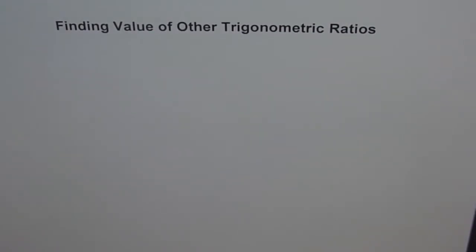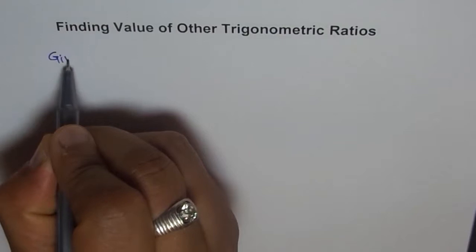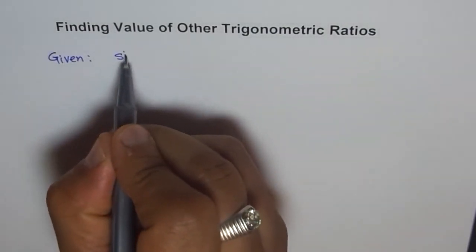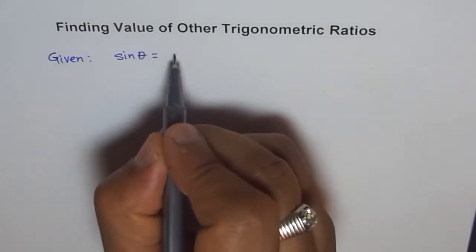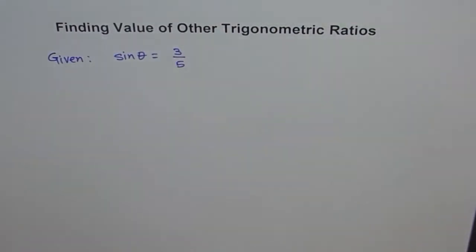Hello, let's now try to see that if we know one trigonometric function, then can we find the values for all others? Let's take an example. Let us say we are given that sin theta equals 3 over 5. I am taking a very simple value so that the idea is to teach you the method and not waste time on complicated numbers.